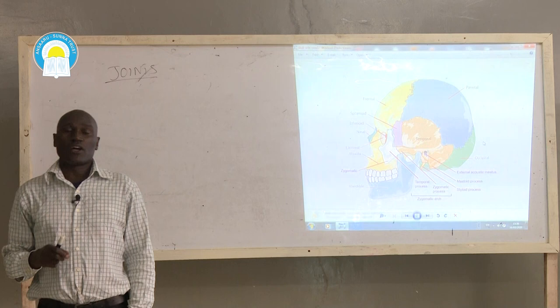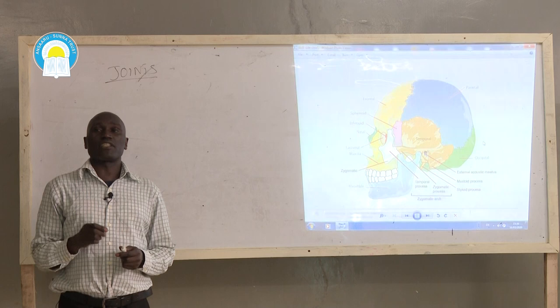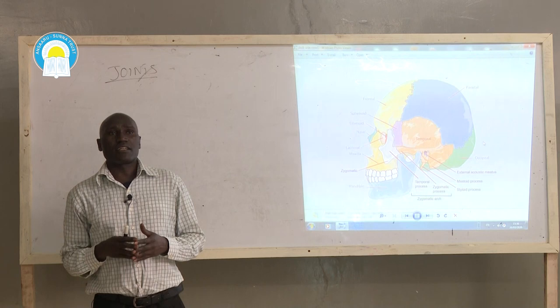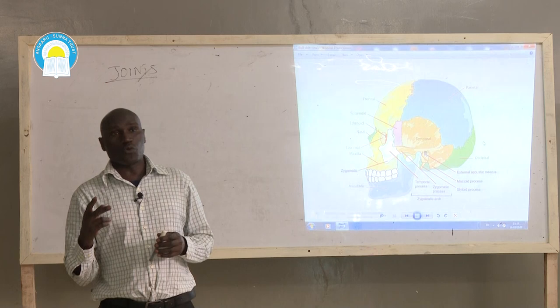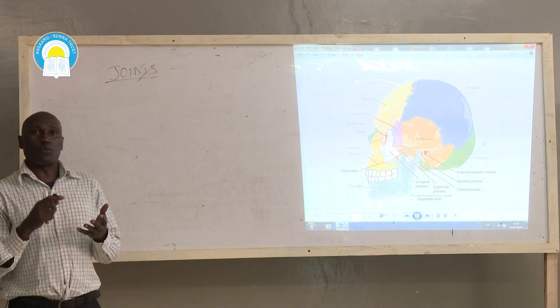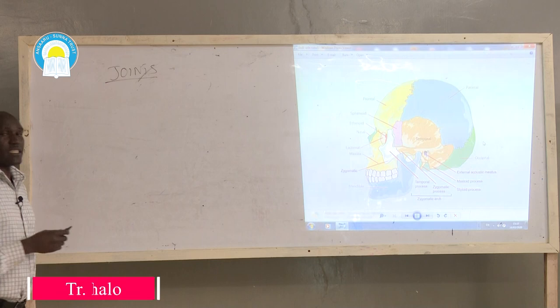By definition, a joint is a connection point where two or more bones meet. There are several types of joints, but we'll summarize them into two broad categories. The first category will be immovable joints, and the second category, movable joints.